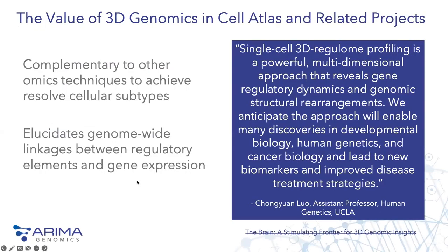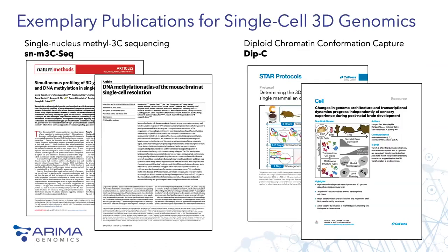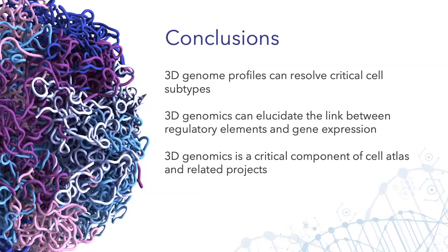We see a lot of value of 3D genomics in cell atlas type projects and other related projects, because this data type is very complementary to other omics like RNA sequencing and ATAC sequencing. It plays a role in resolving cellular subtypes within a tissue, but then goes one step further — using that same underlying data to link regulatory elements to gene expression in all the different cell types. These 3D genome profiles can resolve critical cellular subtype information, link regulatory elements to gene expression, and could be a really valuable asset in cell atlas and related projects.